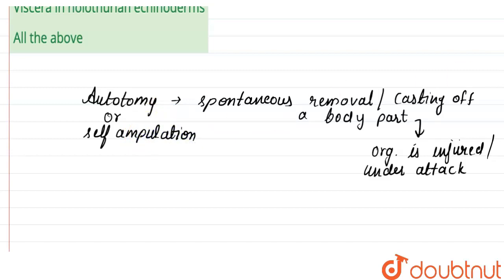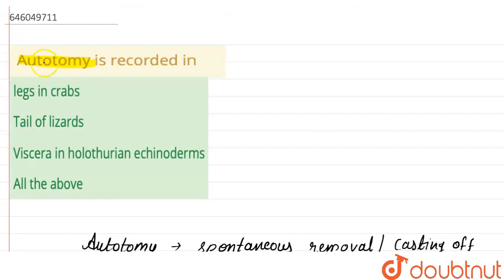Now let's discuss the options. First option: legs in crabs - yes, autotomy is recorded in the legs of crabs, so this is a correct option. Second: tail of lizards - lizards spontaneously remove their tail during injury, so autotomy is also recorded in lizards.